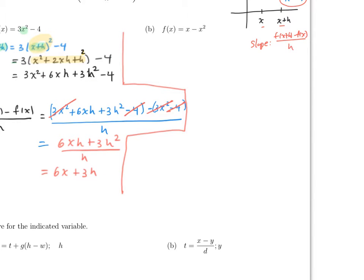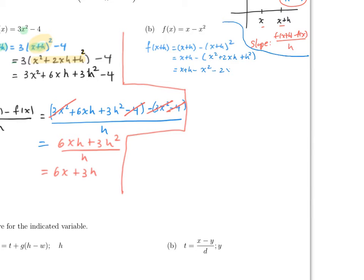Now let's try part b, which is very close to part a. First, we need to find f of x plus h. In our case this will be (x plus h) minus (x plus h) squared. Remember, wherever there is an x, you just replace it by x plus h. Then simplify. The squared term expands to x squared plus 2xh plus h squared, so this is (x plus h) minus x squared minus 2xh minus h squared.